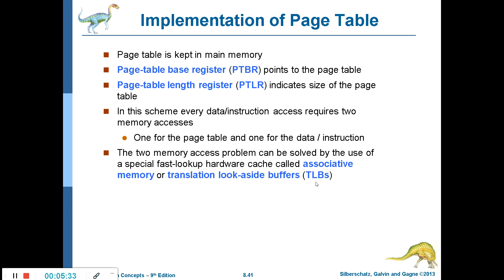To avoid that problem, they came up with a Translation Look-aside Buffer — in short, TLB — also called associative memory. This TLB helps reduce the problem of two memory accesses. Using TLB, you can use just one memory access to get the required frame number.